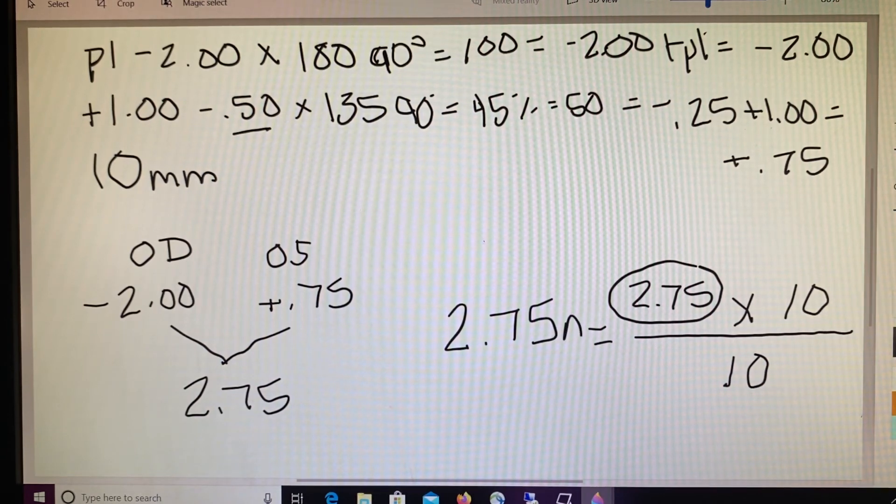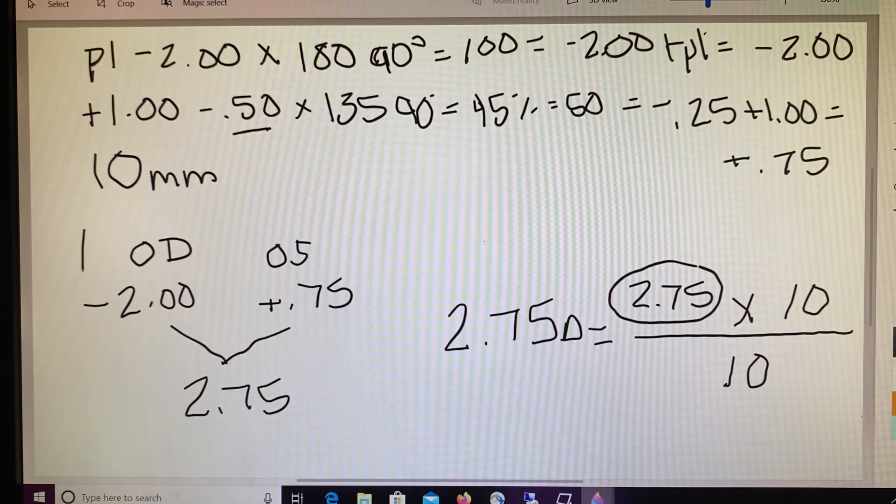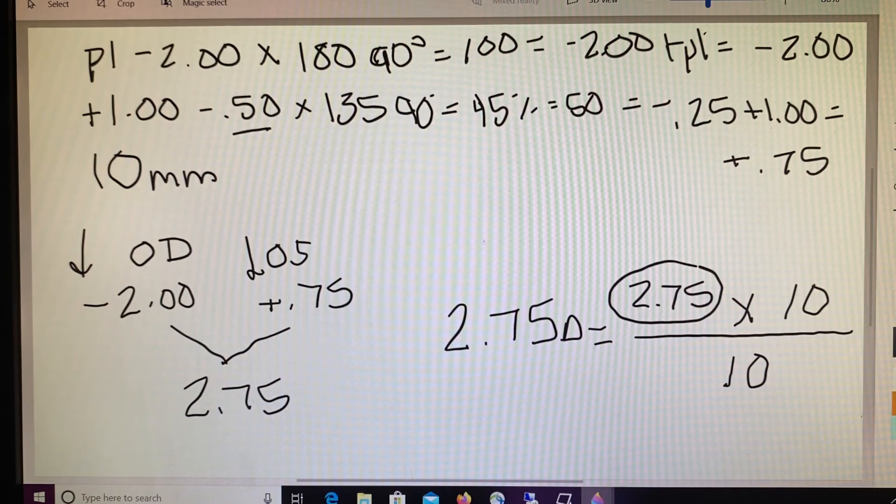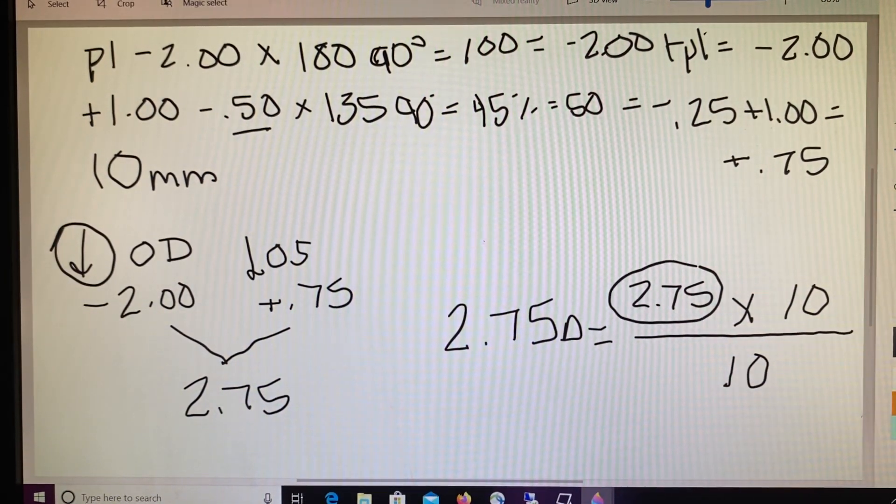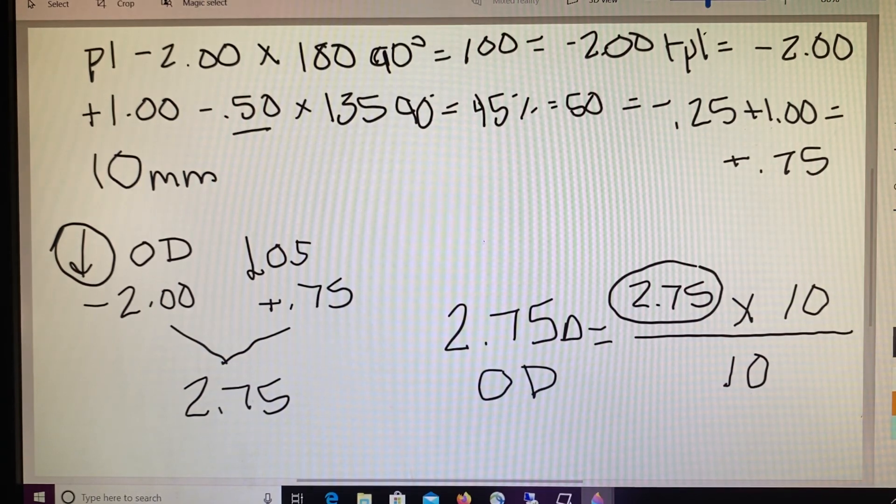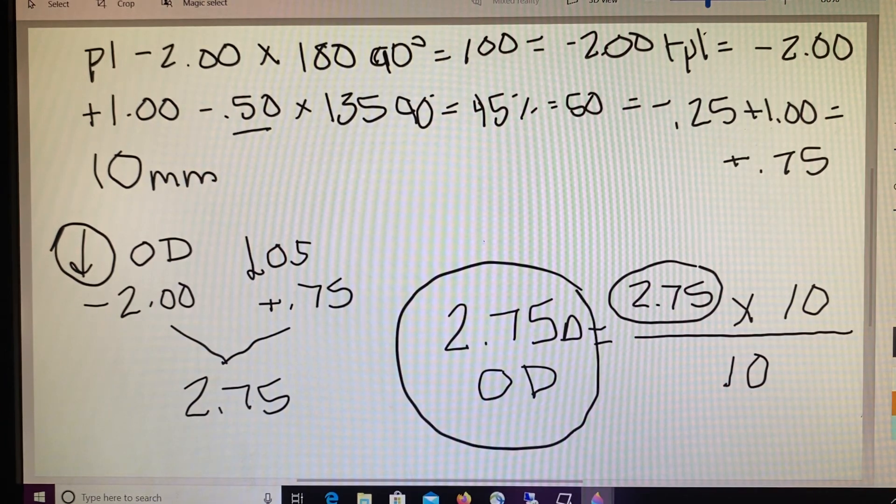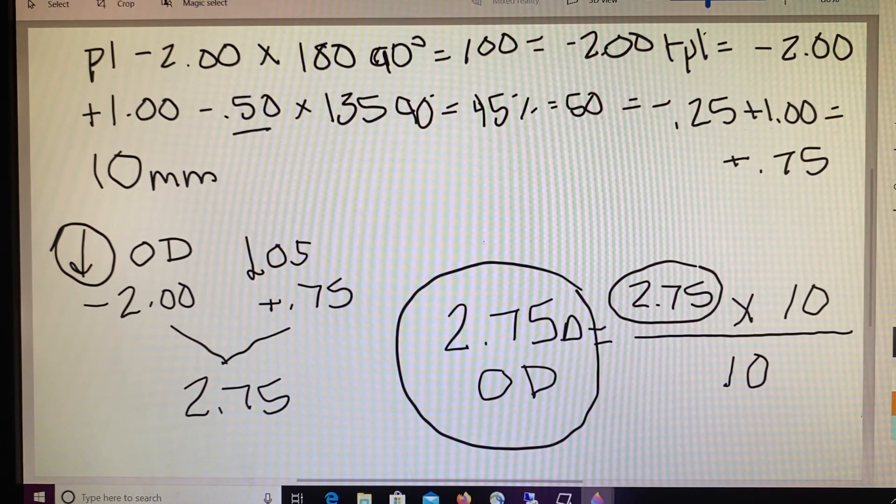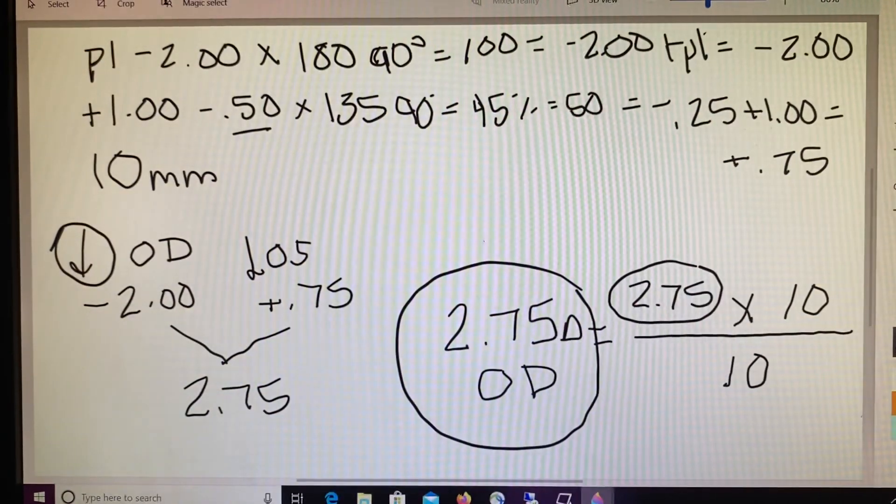So this is the amount of slab off that it's going to take to fix this particular imbalance. Now we've got to determine which eye the slab off should be placed in. And remember, we said least plus, most minus. Now if you remember I said if you have a minus and a plus, it is always going to go in that minus side. So we would be placing this 2.75 diopters of slab off in our patient's right lens. So the answer to practice exercise number 2 is 2.75 in the right side, or OD.